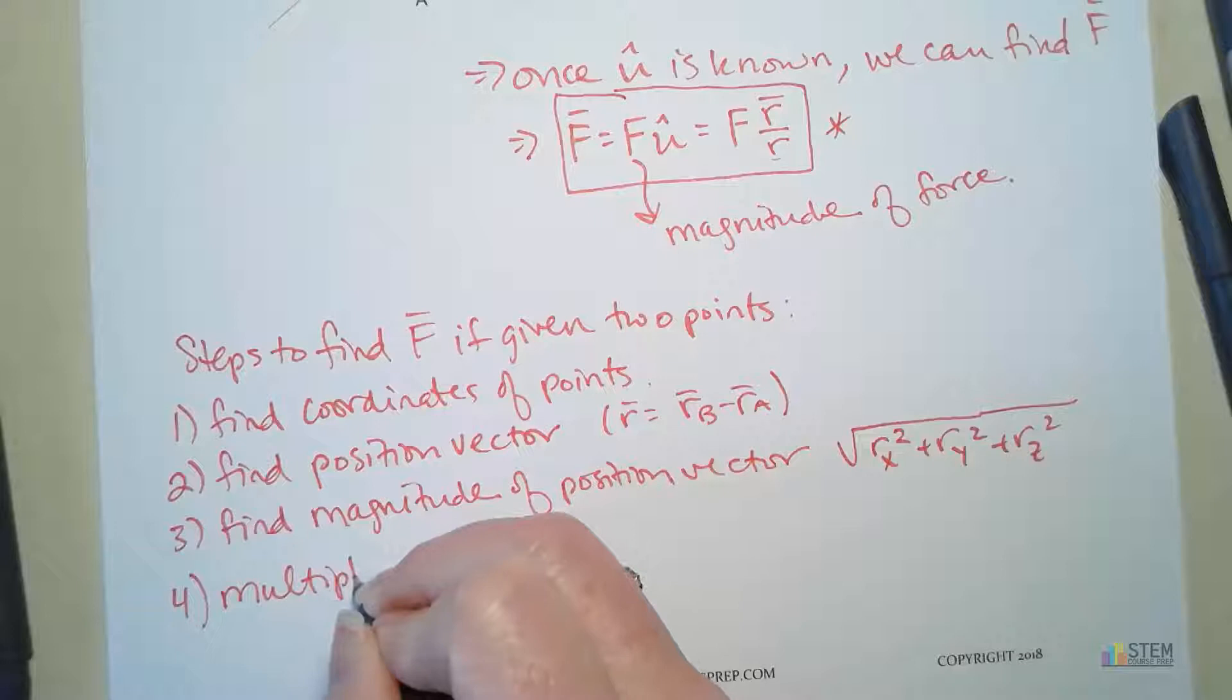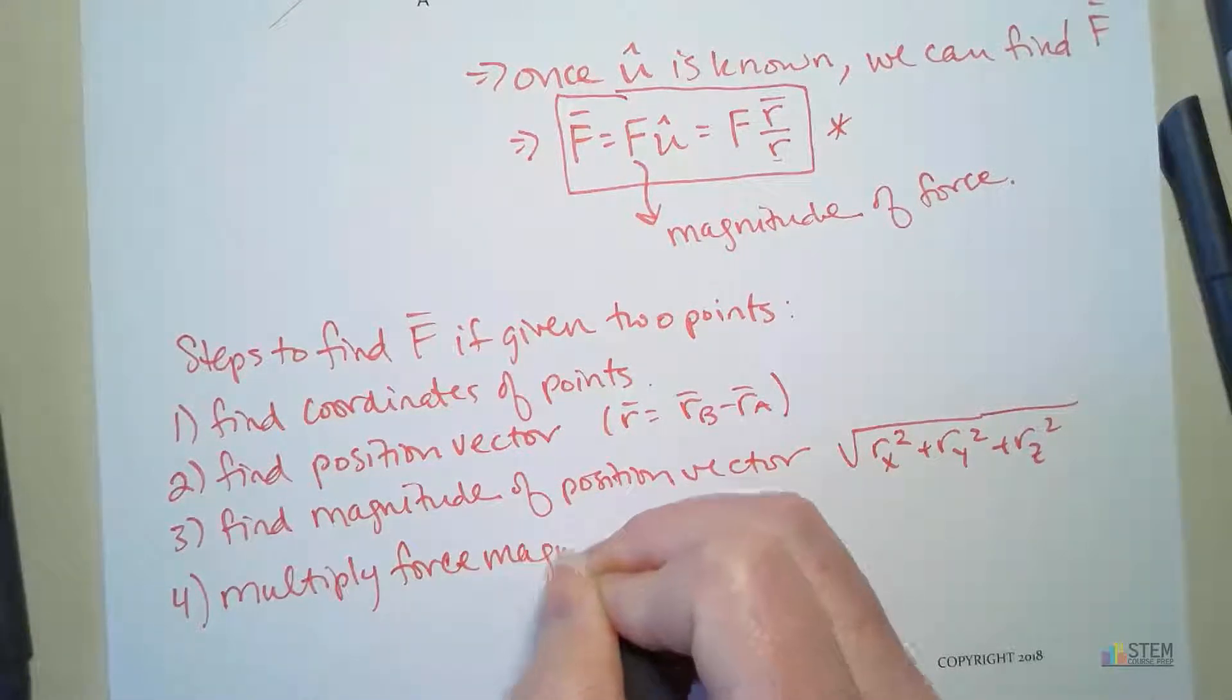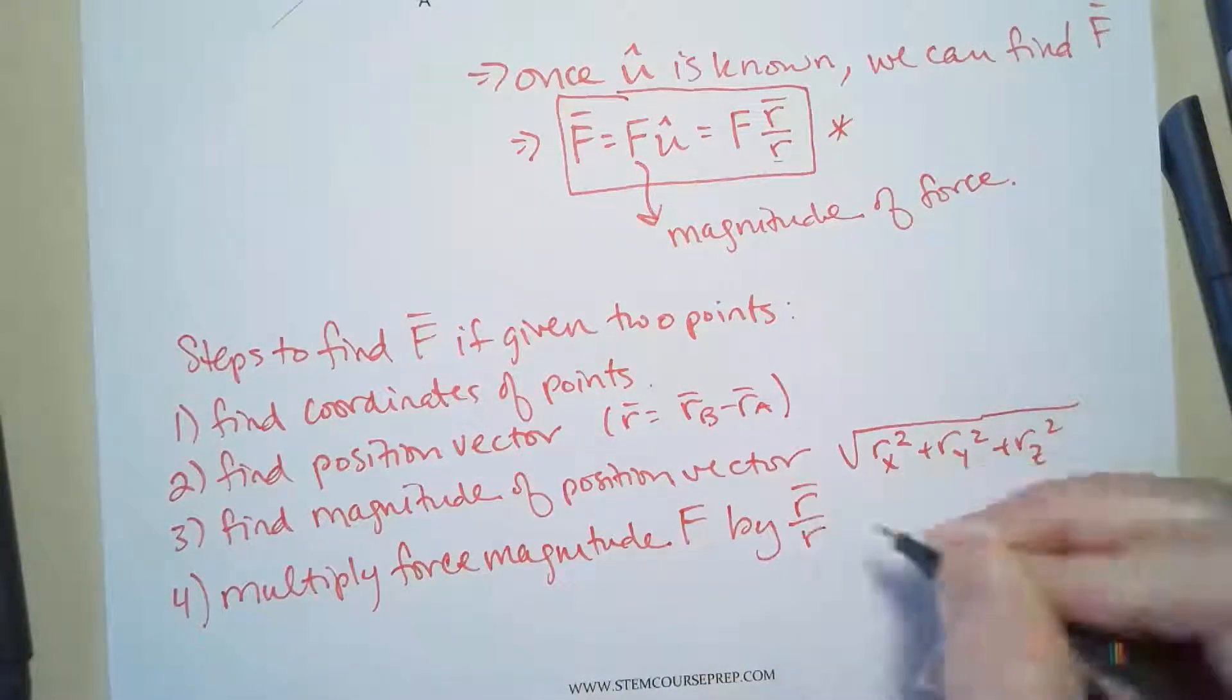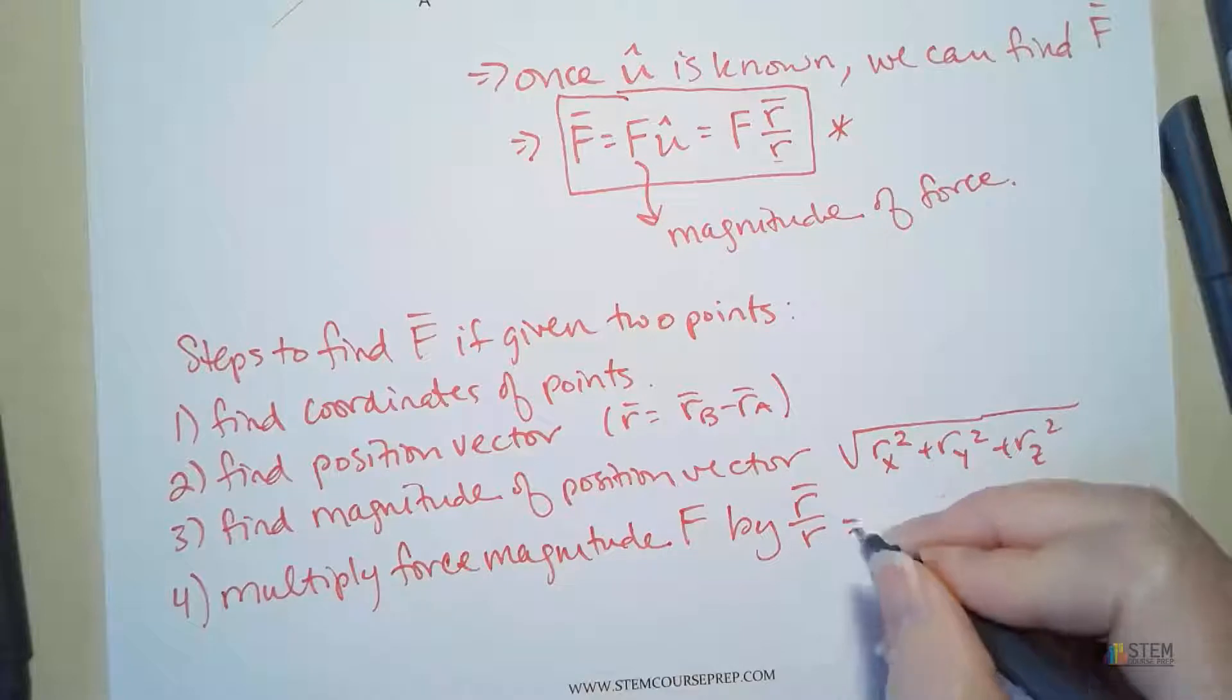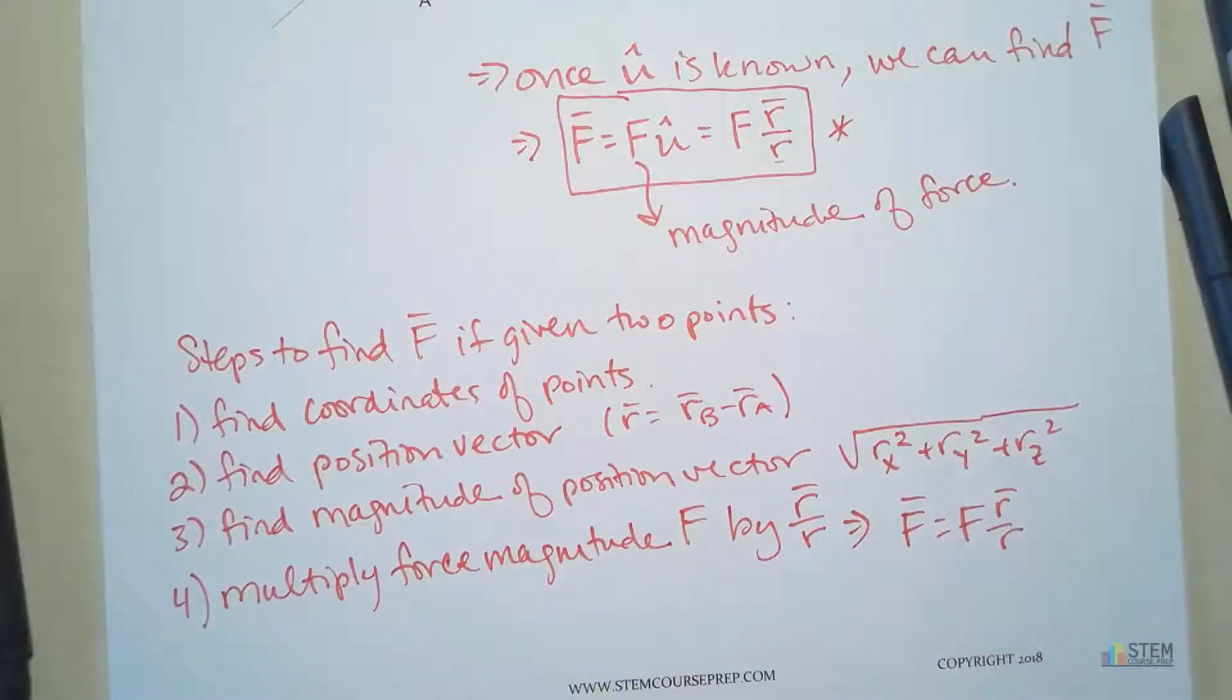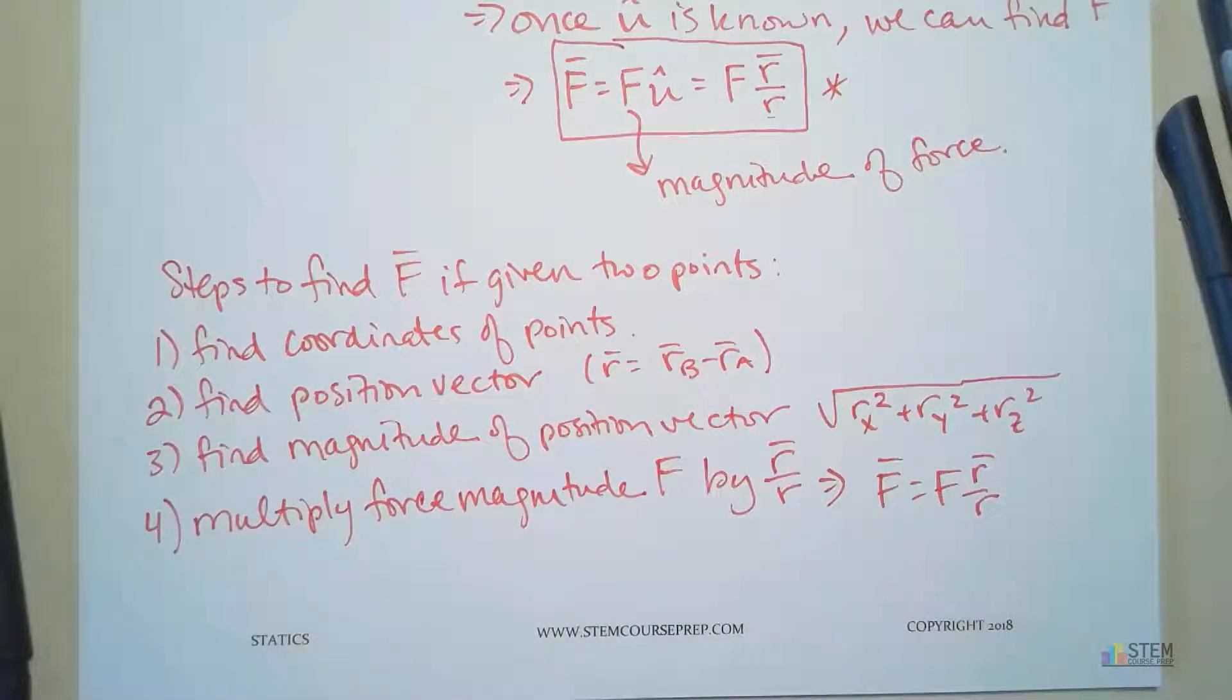That's right. Multiply force magnitude, which is F, by R bar over R. And then that gives you your force vector. Okay. So pretty easy steps to use. You just got to remember what you're doing.